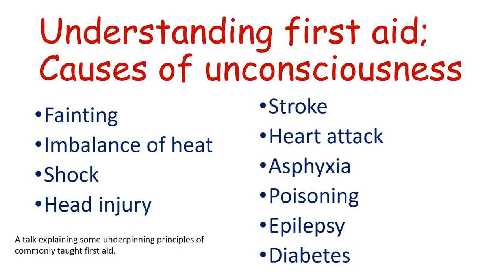A lot of first aid manuals teach the mnemonic FISH SHAPED. Let's think about FISH first. The F stands for fainting. A faint occurs when the blood is no longer going to the brain — when the brain is no longer being perfused. If the blood is not going to the brain, it's not going to get its oxygen and nutrient supply, because the brain needs oxygen and glucose pretty well constantly. The brain is a very metabolically active organ and if this supply is cut off for just a few seconds, the patient will feel unwell and then lose consciousness.